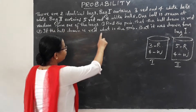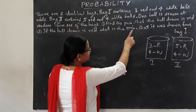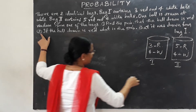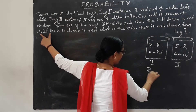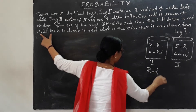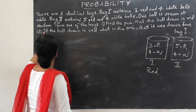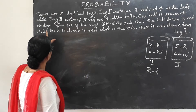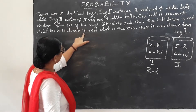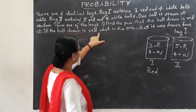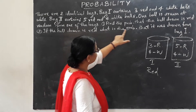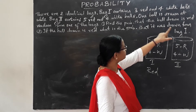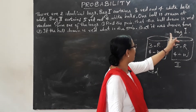First question: find the probability that the ball drawn is red. Second question: if the ball drawn is red, what is the probability that it was drawn from bag one?